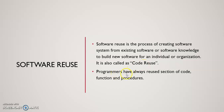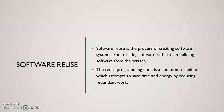Programmers have always reused sections of code, functions, and procedures. Reusing programming code is a common technique which attempts to save time and energy by reducing redundant work. Redundant work refers to the software development lifecycle steps: preliminary investigation, system analysis, system design, coding, testing, implementation, and maintenance — these seven steps that must be followed for any project.